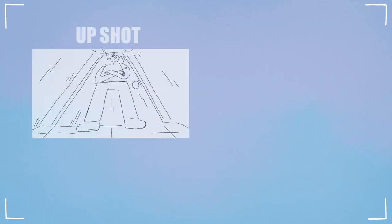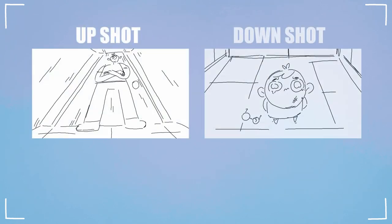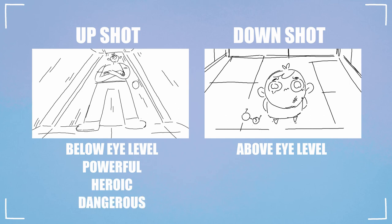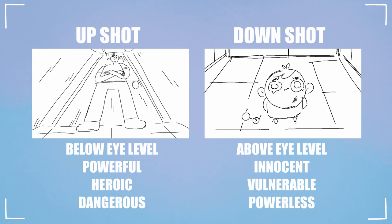Using an upshot or downshot, where the camera will be placed either above or below eye level, can help show power dynamics or scale between characters. Using an upshot can make a character seem powerful, heroic or dangerous, while a downshot can make a character seem innocent, vulnerable or powerless.